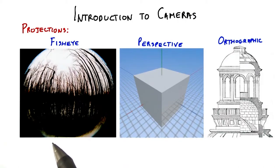There are all sorts of different ways to view the world. Here are three: a fisheye lens, a perspective view, and an orthographic view. These are all different types of projections. A projection maps locations in the world to locations on the screen.